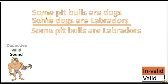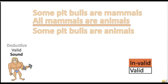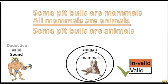Practice problem: 'Some pit bulls are dogs. Some dogs are labradors. Therefore, some pit bulls are labradors.' The argument is invalid — the premises are actually true but the conclusion is actually false, so any such argument is invalid. Next: 'Some pit bulls are mammals. All mammals are animals. Therefore, some pit bulls are animals.' This argument is valid. If you assume at least one pit bull is a mammal, and all mammals are inside the animals group, then at least one pit bull would have to be inside the animals group.